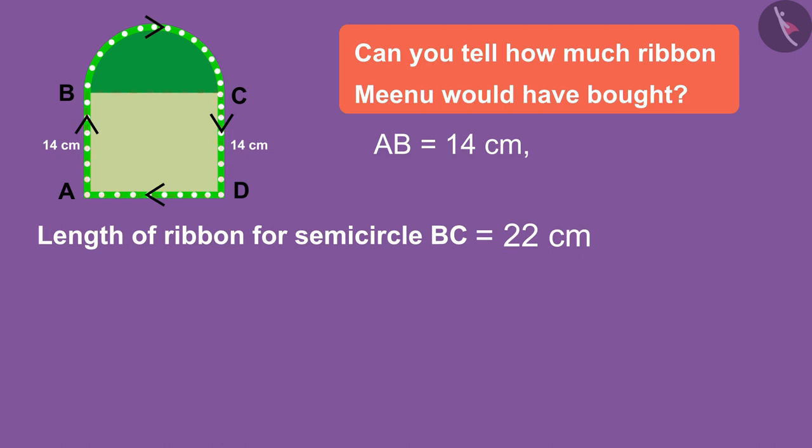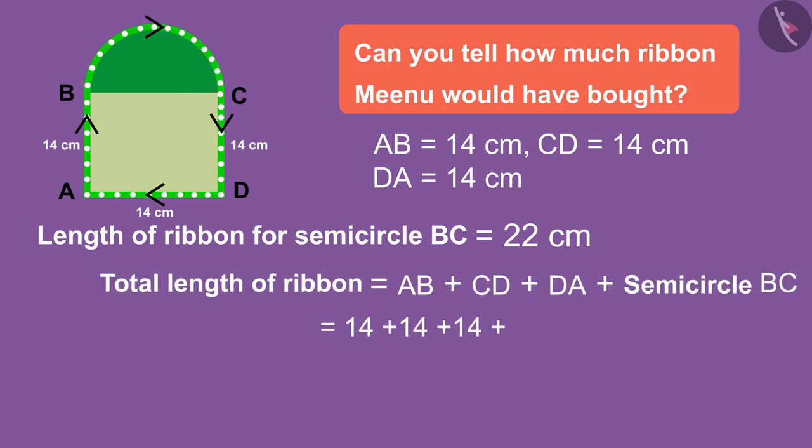Since the values of all the sides of the square are equal, therefore, a ribbon of 14-14 centimeter length will be put on CD and DA sides as well. In this way, a piece of cardboard will have a total of 64 centimeter ribbon.